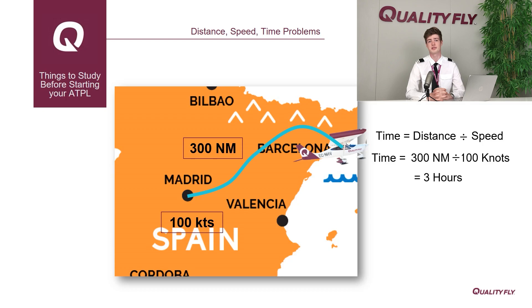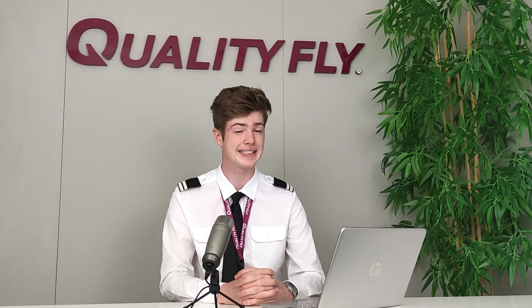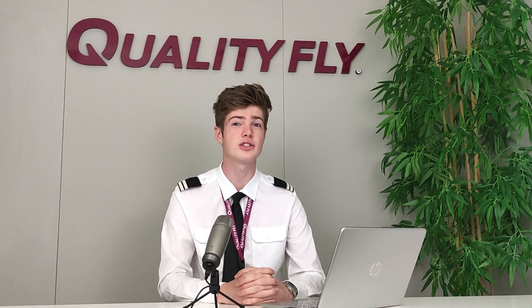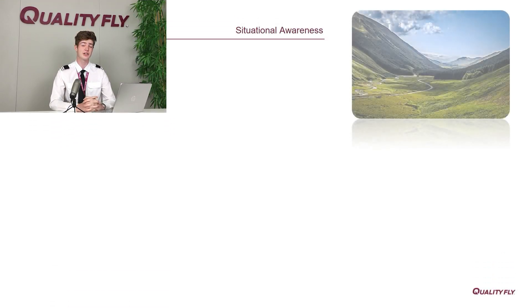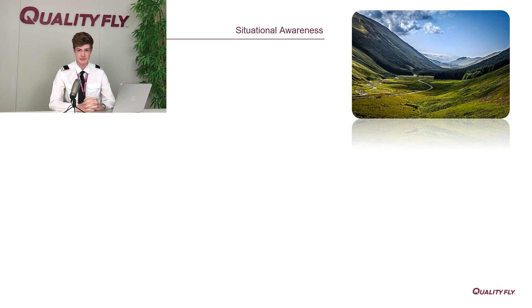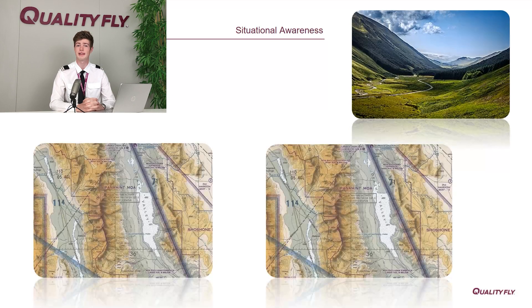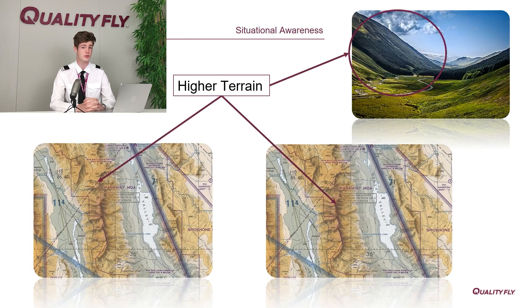It is crucial for pilots to be constantly aware of where they are with respect to their surroundings — this is known as situational awareness. If we are in an aircraft flying through this valley with higher terrain on our left, in which direction are we flying — in this direction, or in this direction?